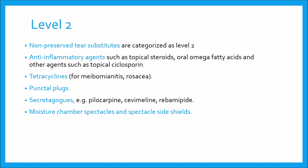Level 2 includes: number one, non-preserved tear substitutes, categorized as Level 2 treatment by some authorities. Number two, anti-inflammatory agents such as topical steroids, oral omega fatty acids, and other agents such as topical cyclosporines. Number three, tetracyclines for meibomitis or rosacea. Then punctal plugs. After that, secretagogues — for example, pilocarpine, cevimeline, and rebamipide. Then the role of moisture chamber spectacles and spectacle side shields.